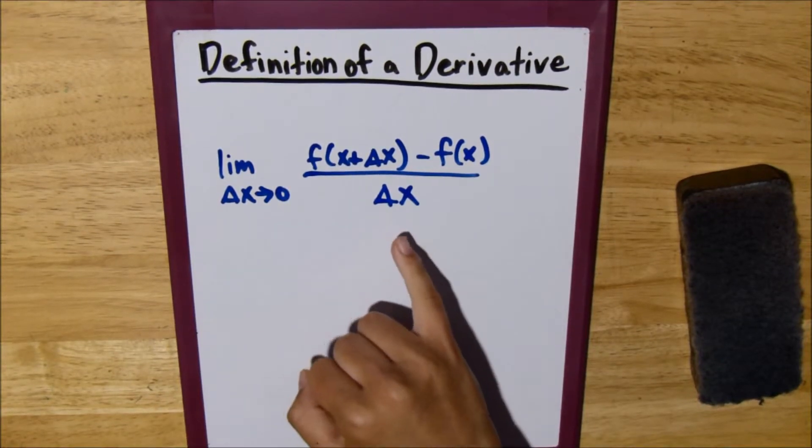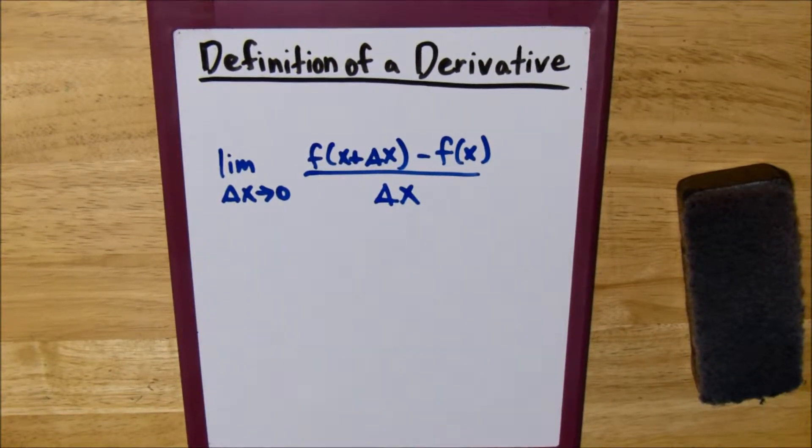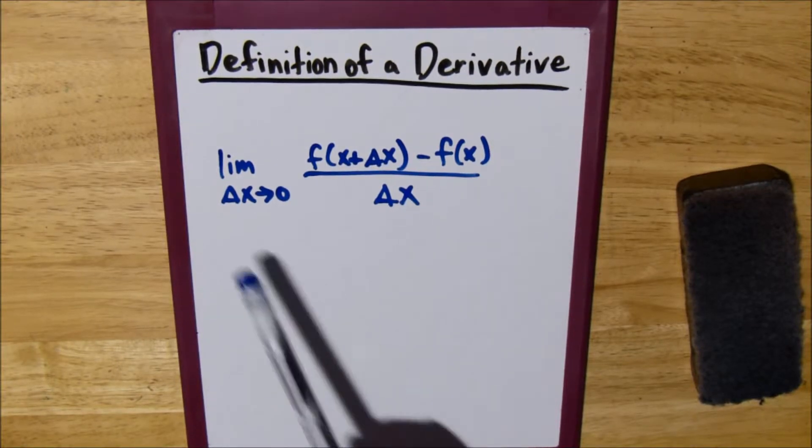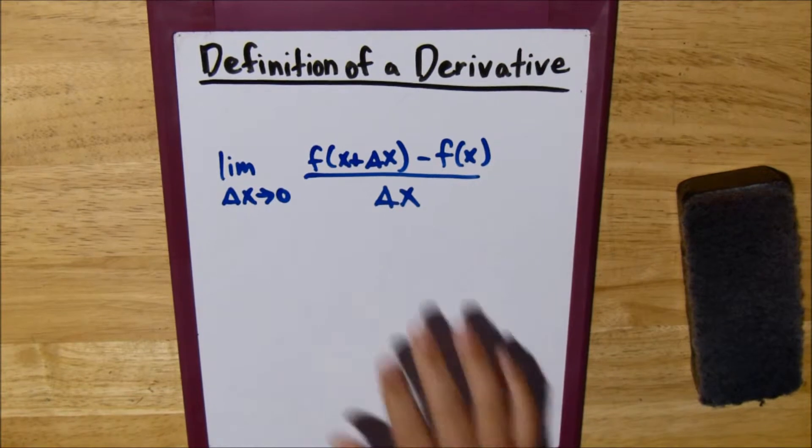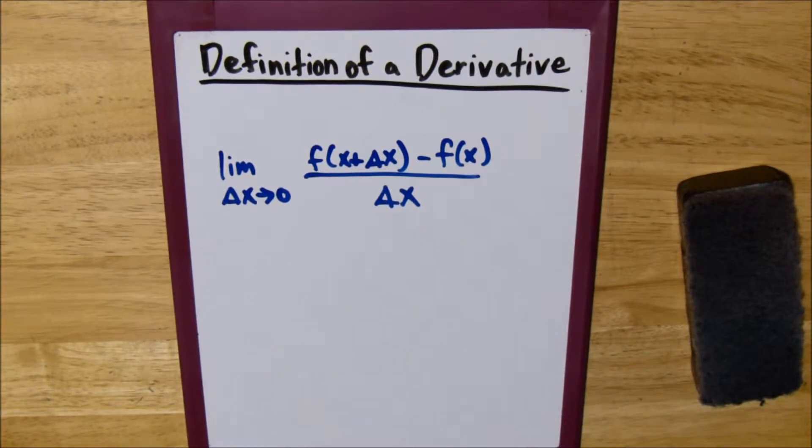Now, delta x here is really just a variable. Sometimes you'll see it replaced with h, sometimes you'll see it replaced with a, it really just means the change in x. It's just a variable.